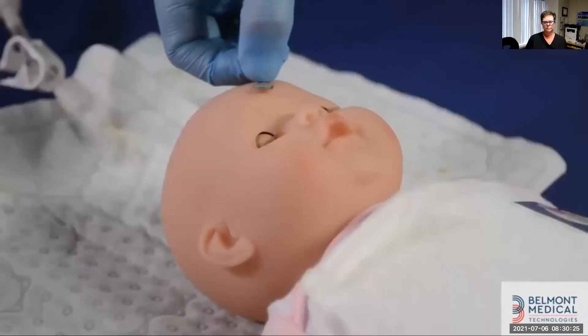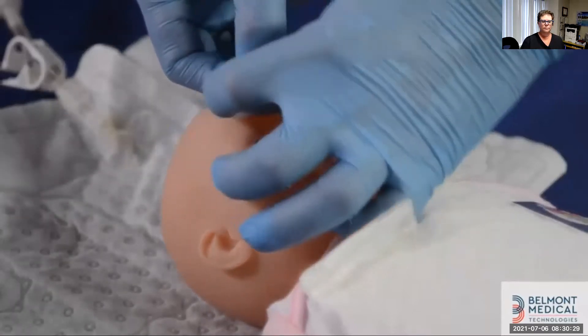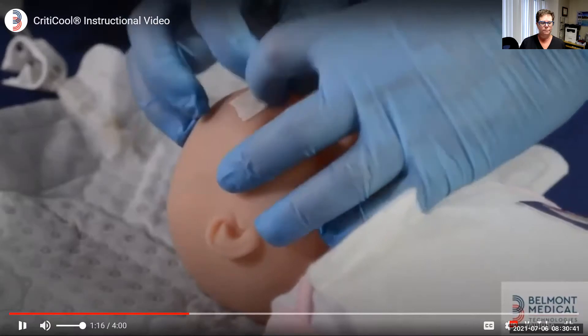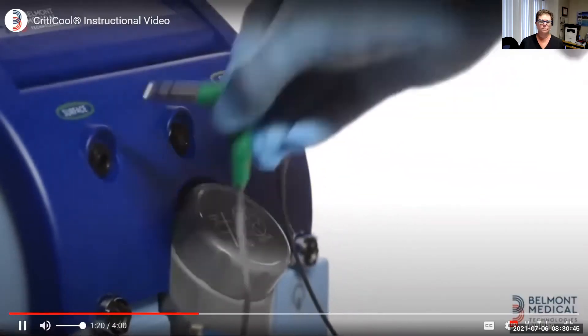Position the core and surface temperature probes. The patient's core temperature can be measured via esophageal or rectal temperature. We will continue to use bladder temperature as it connects nicely into the core probe. Connect the temperature probes, gray for core, green for surface.